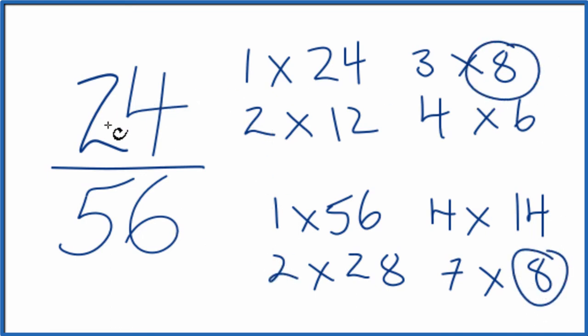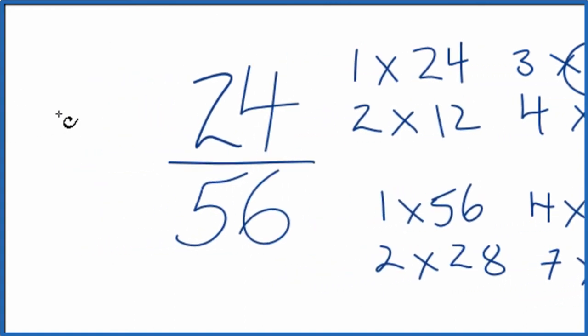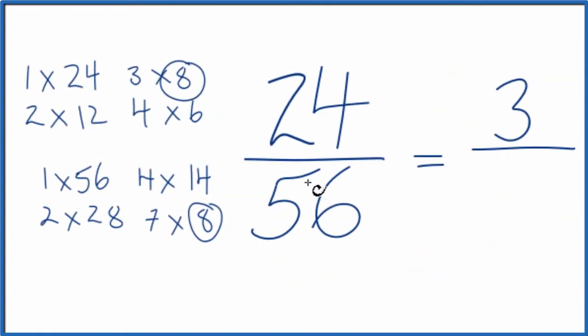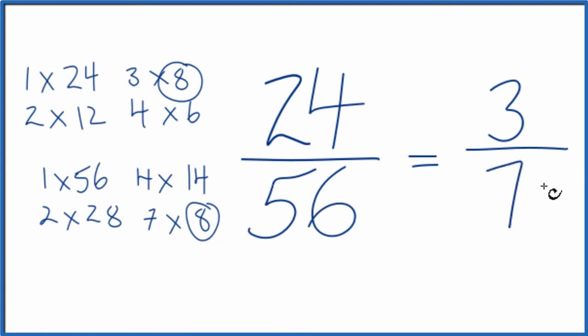We divide 24 by 8 and 56 by 8, and we'll simplify 24 over 56. Let's move these over here. So 24 divided by 8, that's 3. 56 divided by 8 is 7, and we've simplified 24/56 down to 3/7.